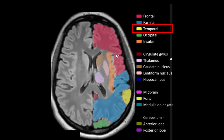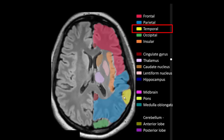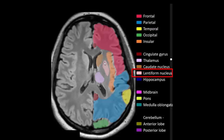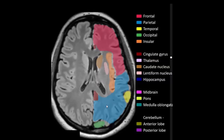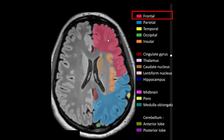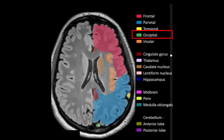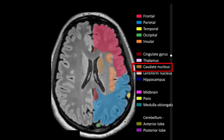Frontal lobe, parietal lobe, temporal lobe, occipital lobe, insular cortex, lentiform nucleus, thalamus, head of caudate nucleus, cingulate gyrus. Body of caudate nucleus, cingulate nucleus.